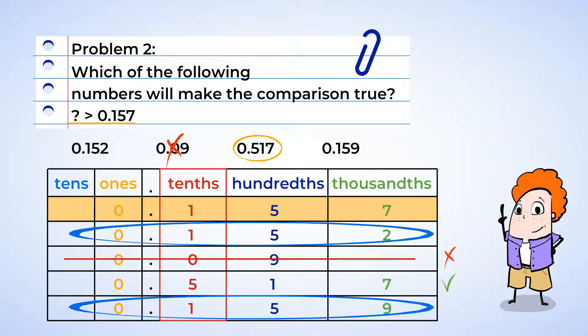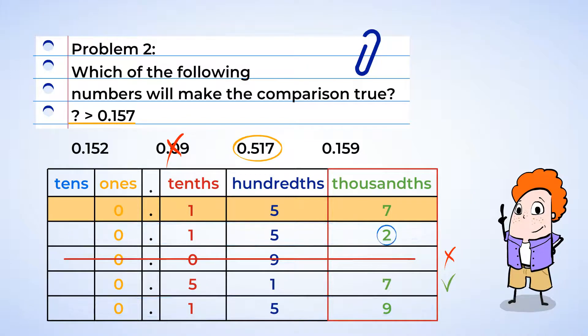Both numbers have a five in the hundredths place too, just like one hundred fifty-seven thousandths. So we need to move another place value over to the thousandths. Now this number has a two in the thousandths place. And two is not greater than seven, so we can cross that out. And this next number has a nine in the thousandths place. And nine is greater than seven. So zero point one five nine is greater than zero point one five seven.